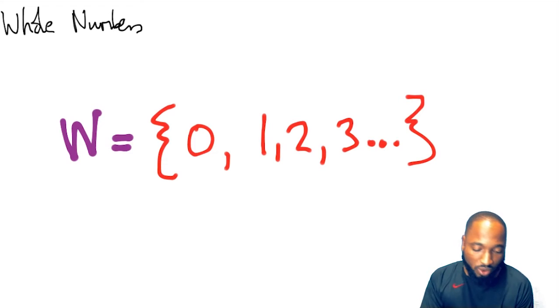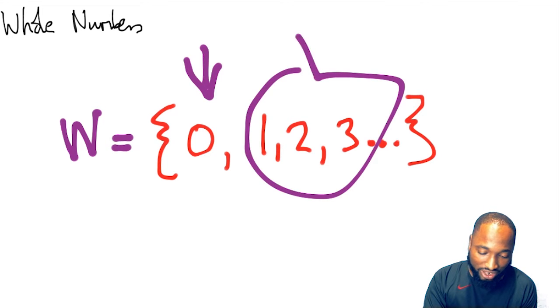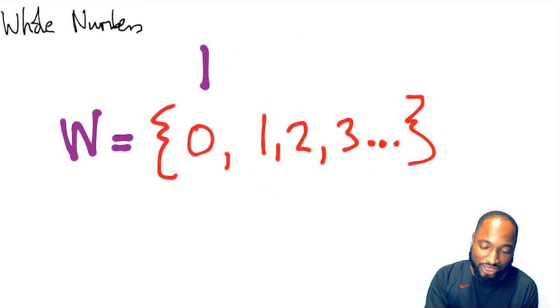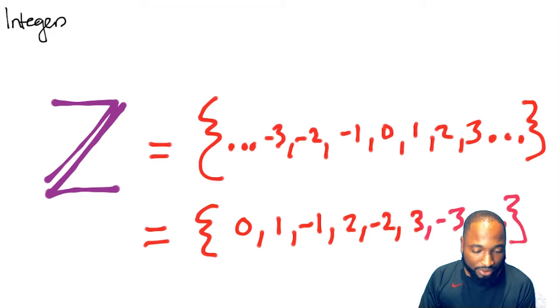Whole numbers, W. We're just going to add zero in there. So it's basically natural numbers plus zero, and that was the question in the last video. Hope you got that one.